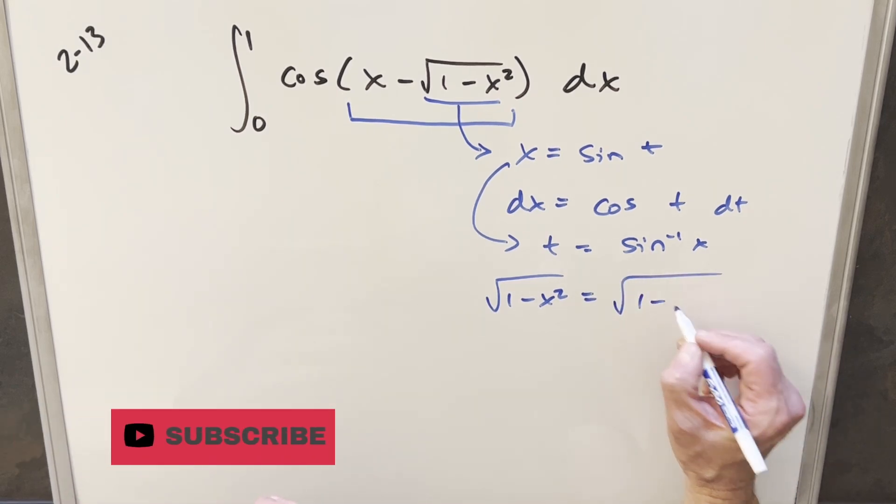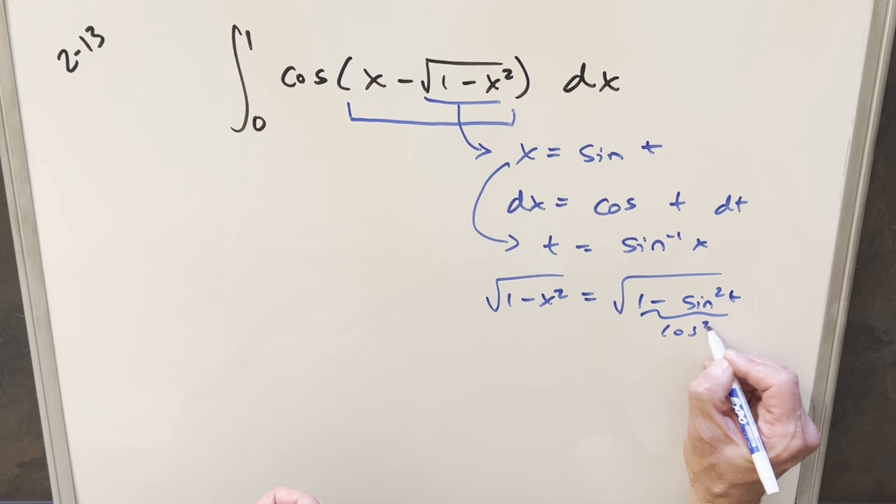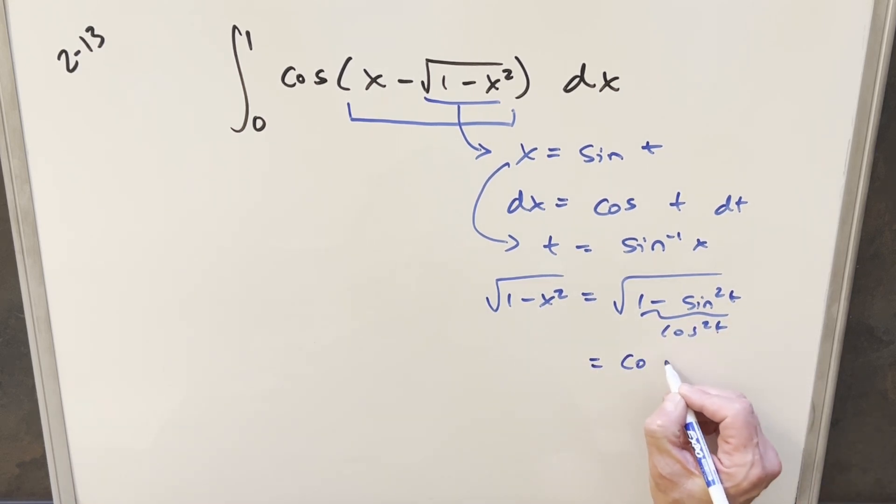sine squared t, but this is the same thing as cosine squared t, but then taking the square root on this, this is just going to become cosine of t.